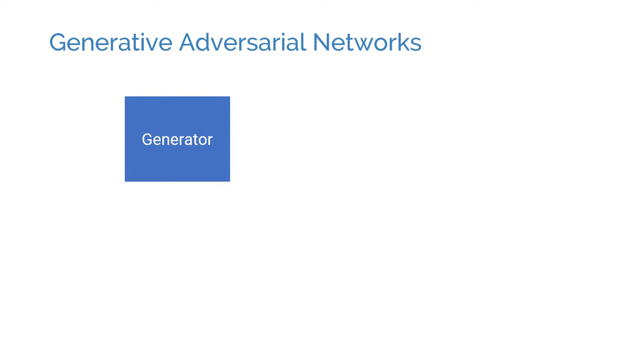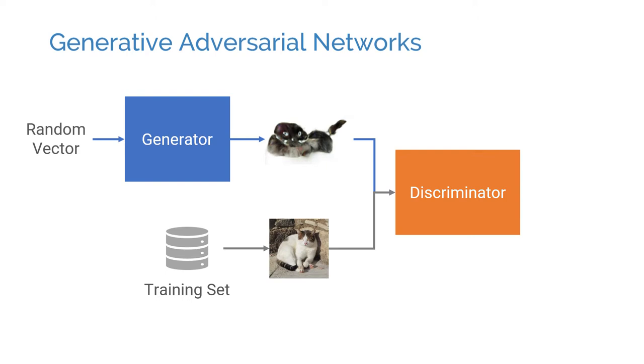At each training step, the generator inputs a code vector and generates a sample. The code vector can be a vector of random values. This will prevent the model from producing the same sample every single time.